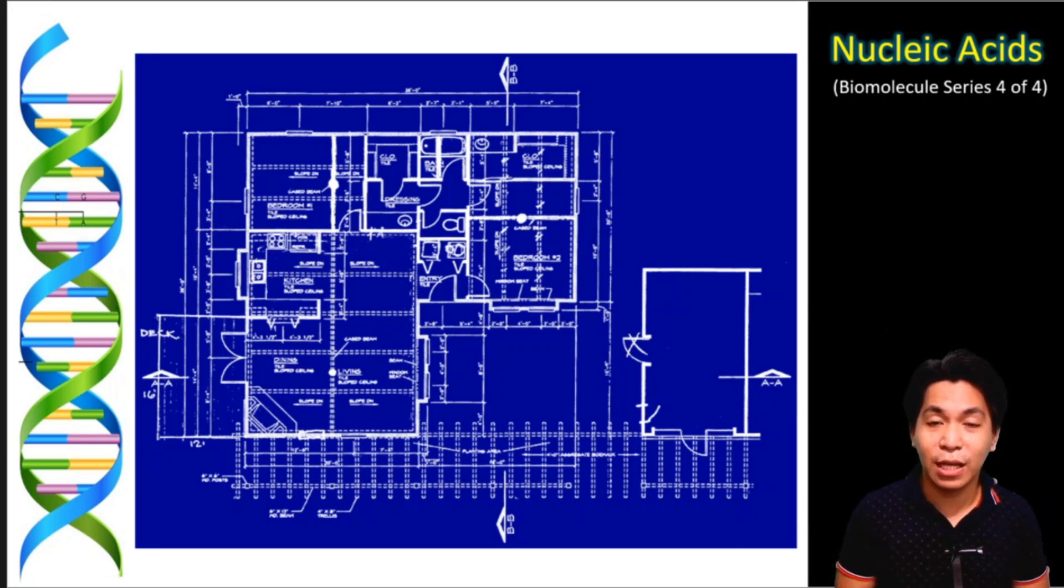A blueprint is used by people in order for them to know what is the plan in order to create a certain structure. This blueprint is important because it gives the full details of whatever is needed to be constructed. Our body also has what we call a blueprint of our identity. This is the focus of the last video in this miniseries which is entitled Nucleic Acids.